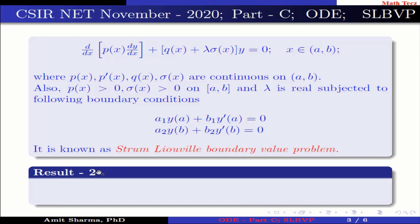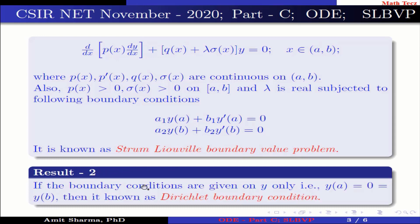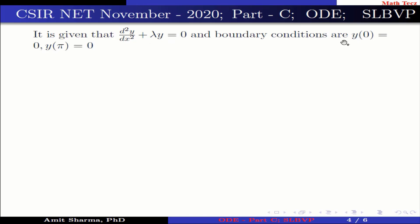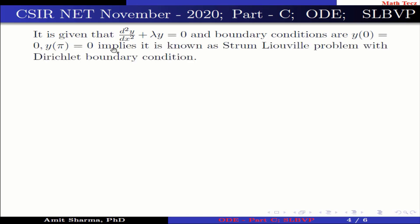Result 2: If the boundary conditions are given on y only, that is y(a) = 0 = y(b), it is known as the Dirichlet boundary condition. Given d²y/dx² + λy = 0 with y(0) = 0 and y(π) = 0, this is a Sturm-Liouville problem with Dirichlet boundary conditions.